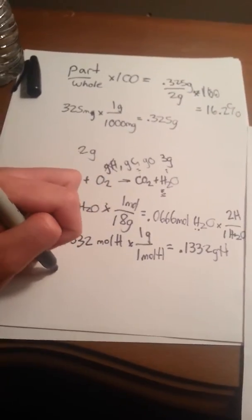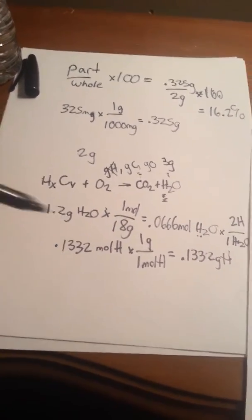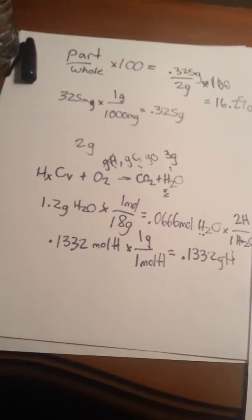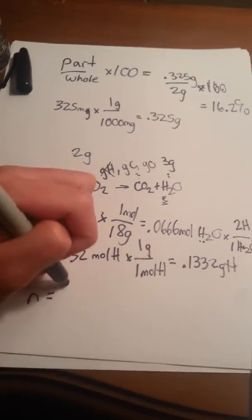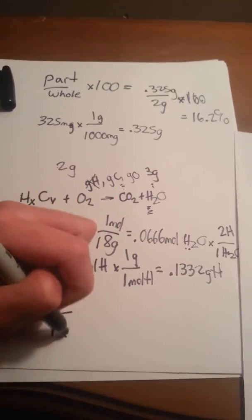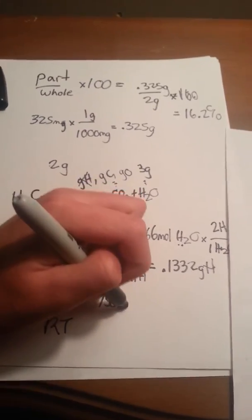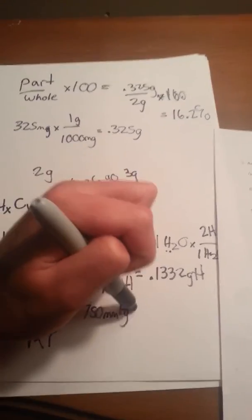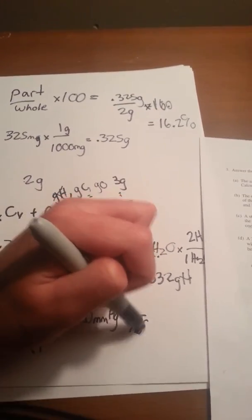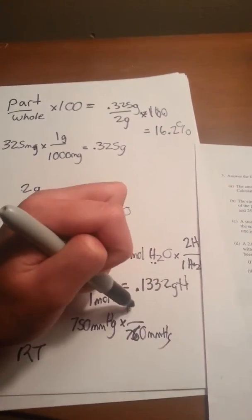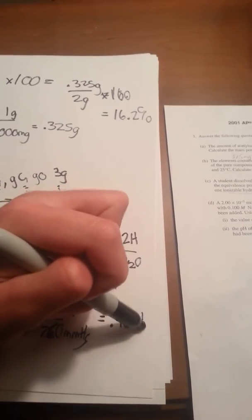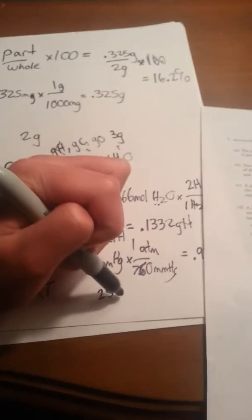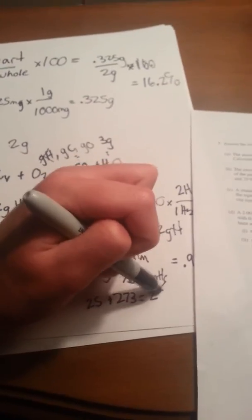Now we're going to go on to carbon. They give us 3.72 liters and also pressure and temperature, so we are going to use PV equals nRT. First, we have to convert the pressure from 750 millimeters of mercury to ATM. That equals 0.987 ATM. We also need to convert temperature: 25 Celsius plus 273 equals 298 Kelvin.